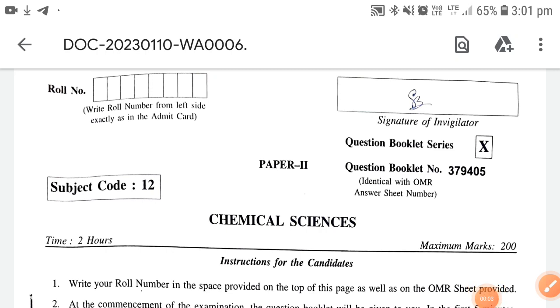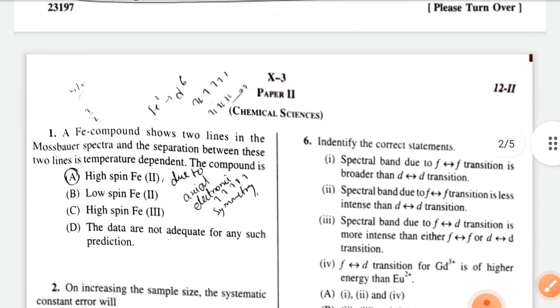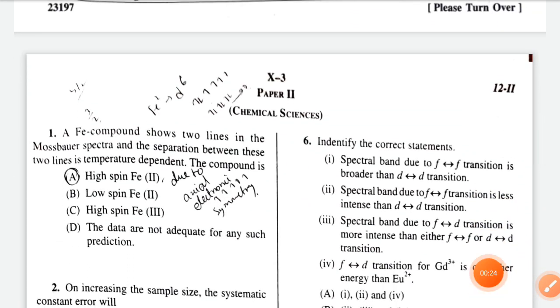Hello guys, today we are discussing 24th WB SET exam paper in chemical science. We are discussing the inorganic part. This is the expected answer key. When the official answer key is released, we will match these questions.